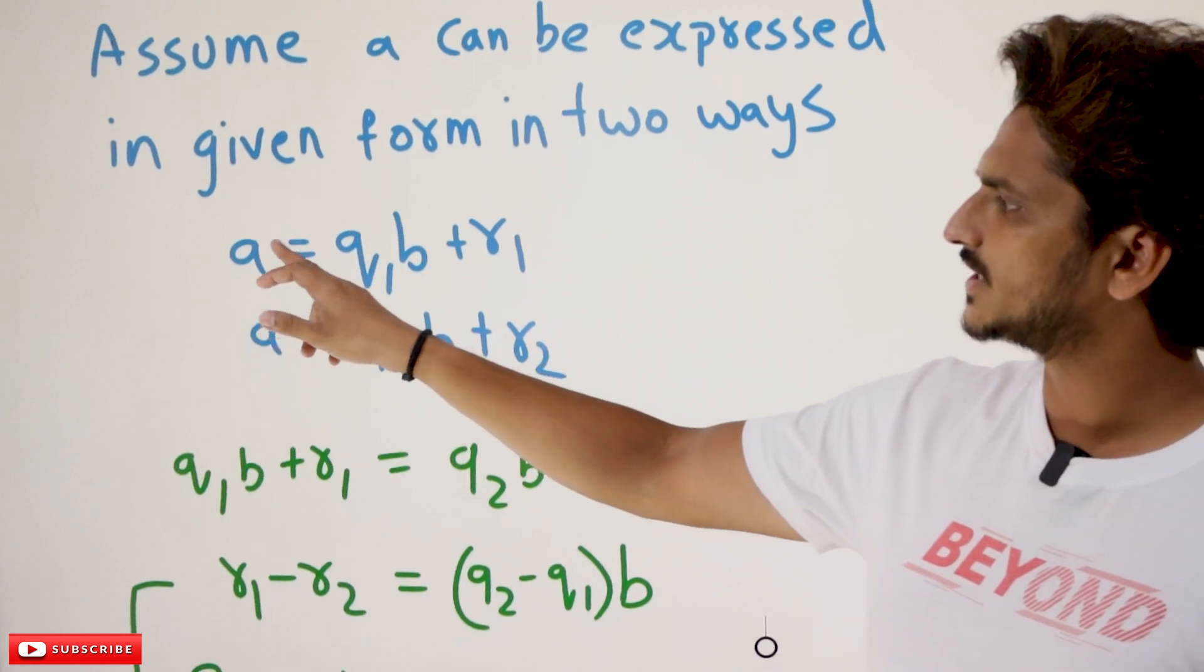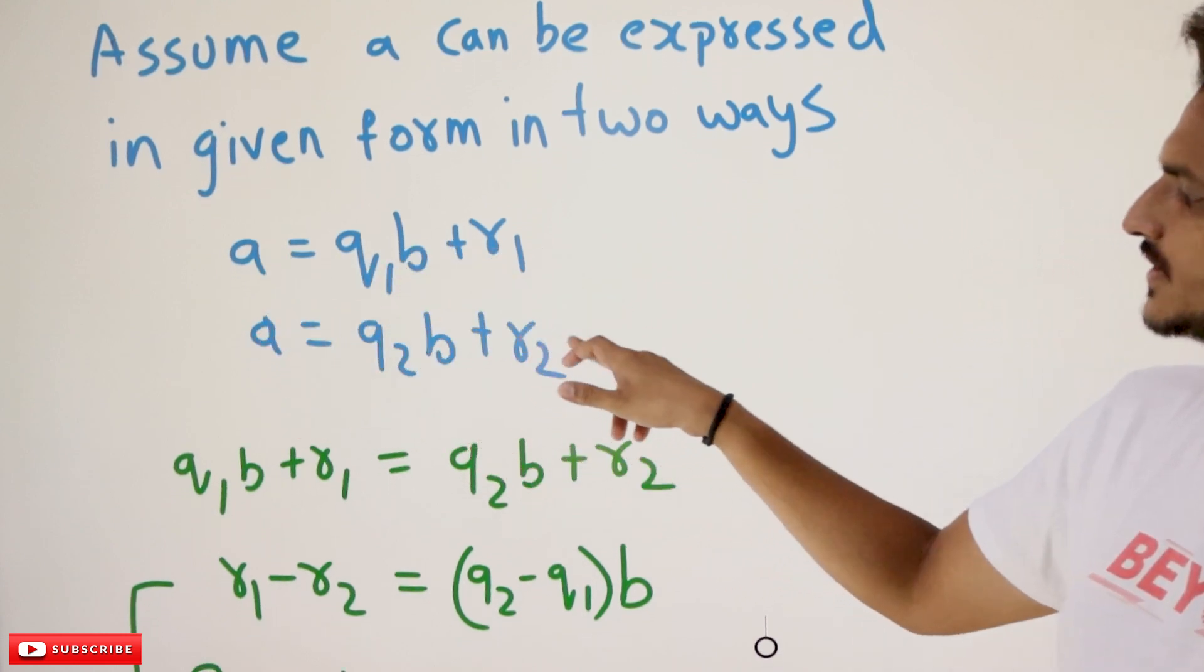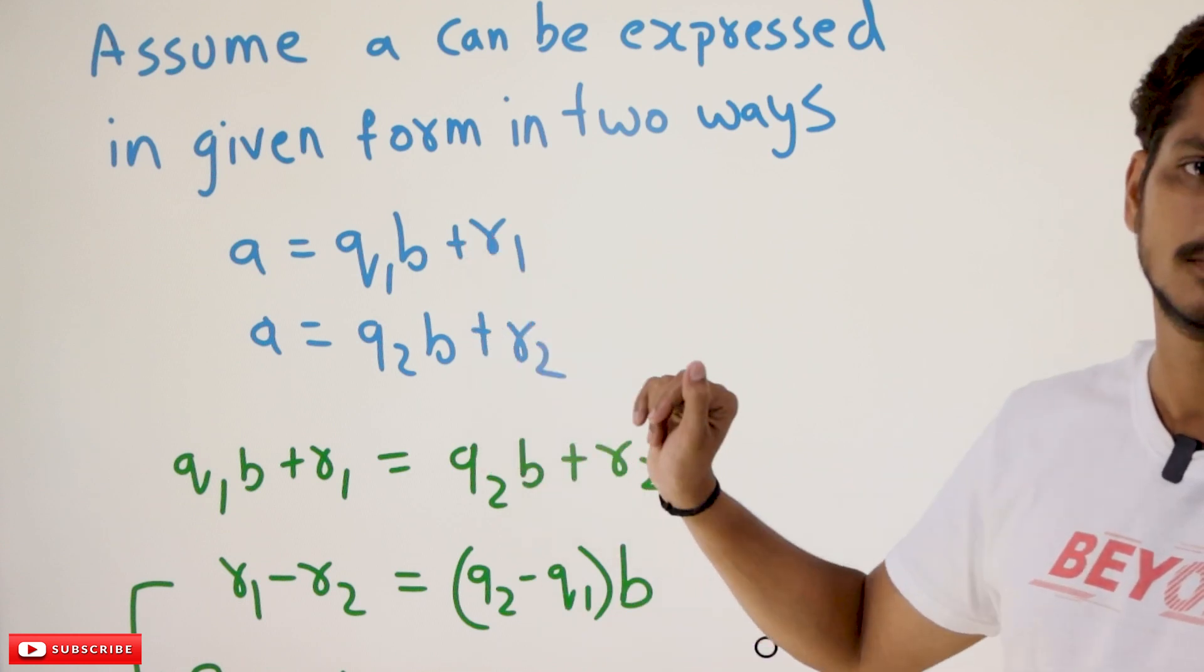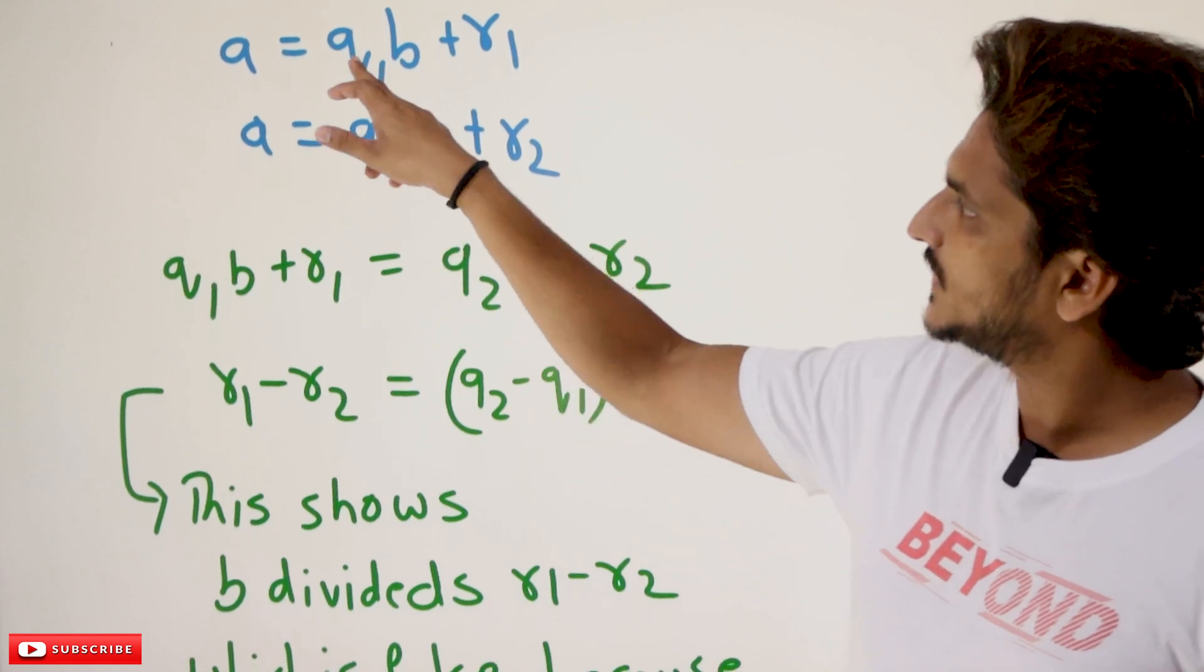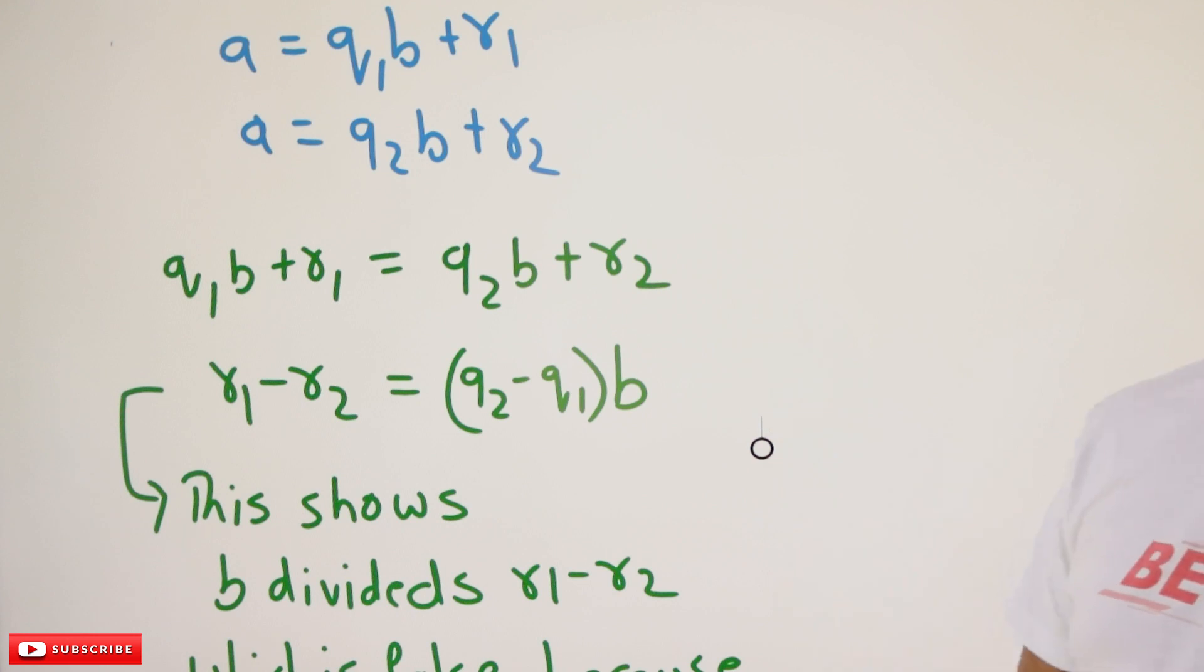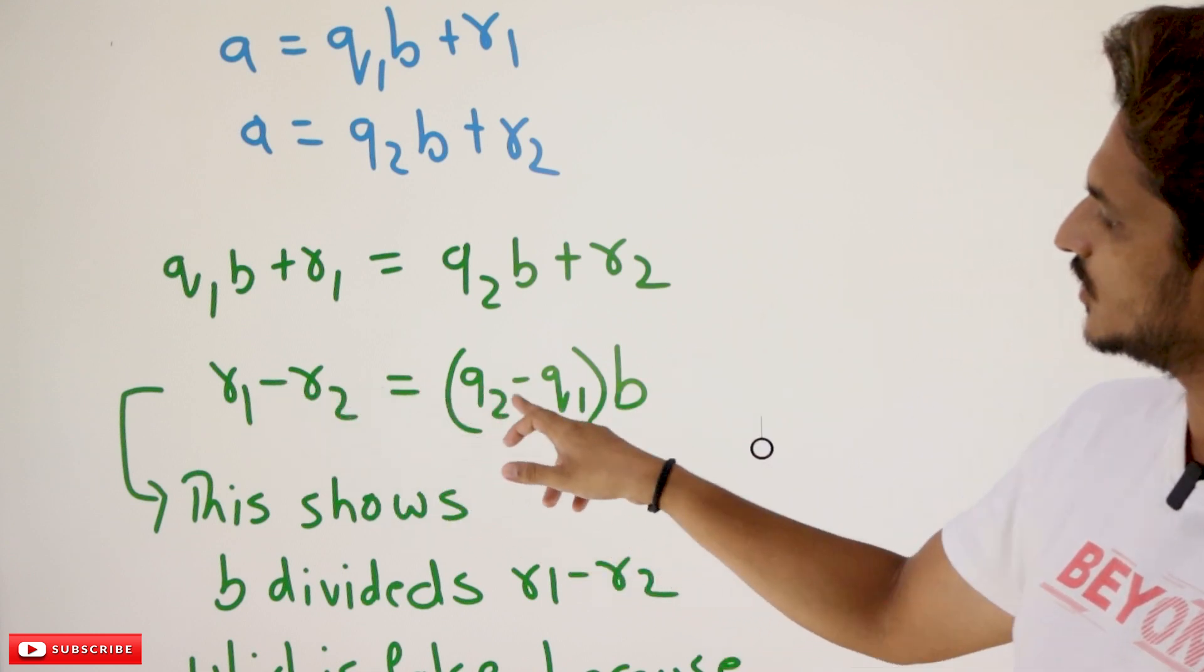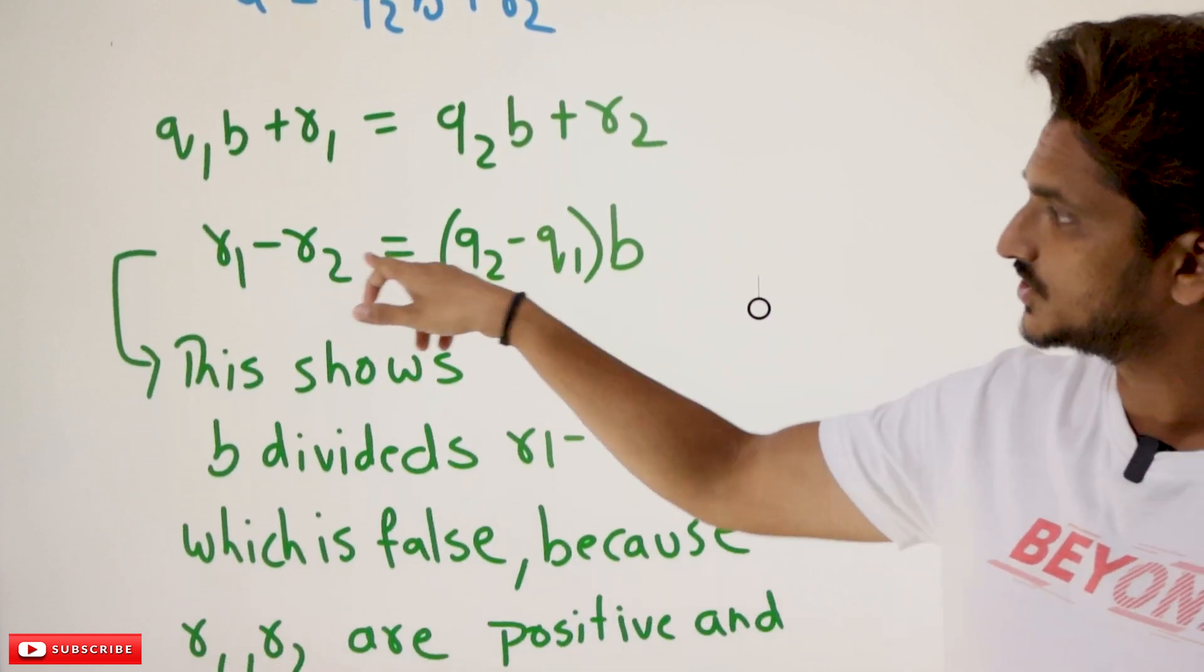Assume that A can be written as A equals Q1B plus R1 and A equals Q2B plus R2. Assume that this is possible. At the end, we are going to show that it is not possible. Both are equal. So from these two statements, we can write Q1B plus R1 equals Q2B plus R2. If you take the R1s and Qs to the right hand side, R1 minus R2 equals Q2 minus Q1 times B.